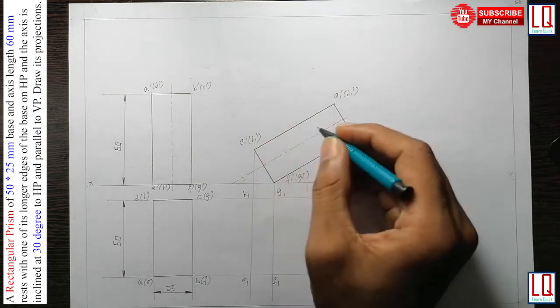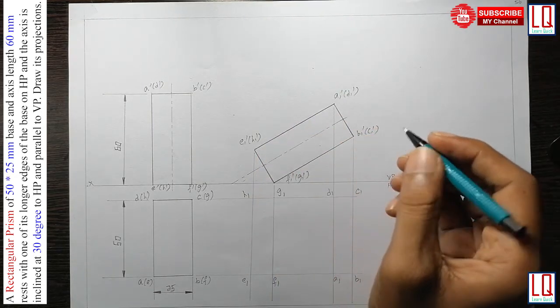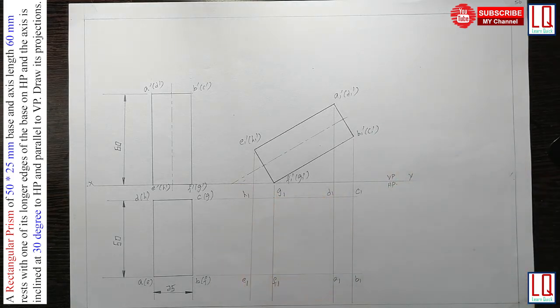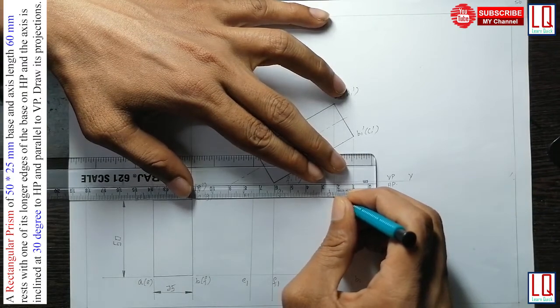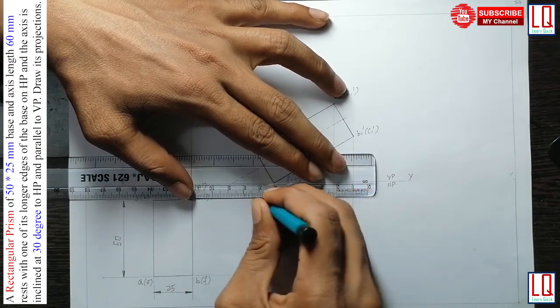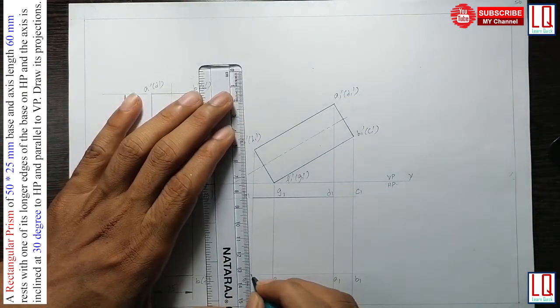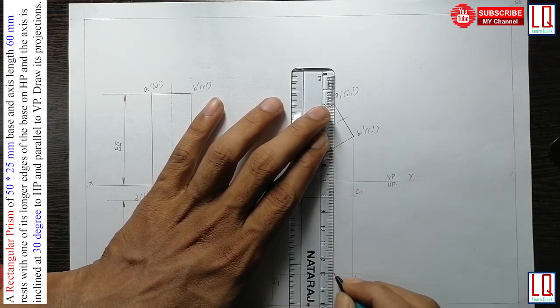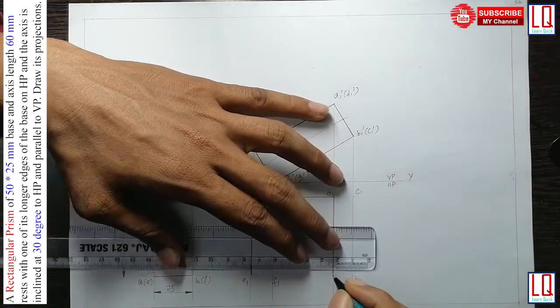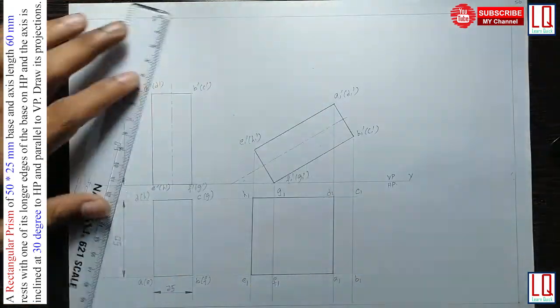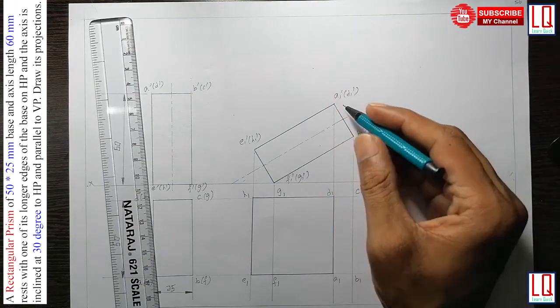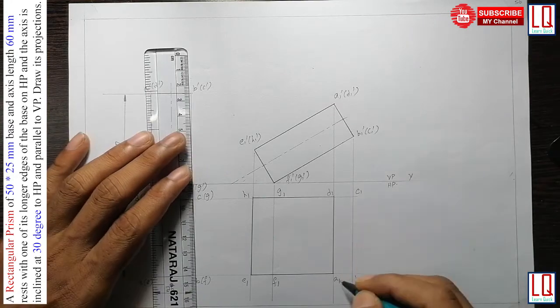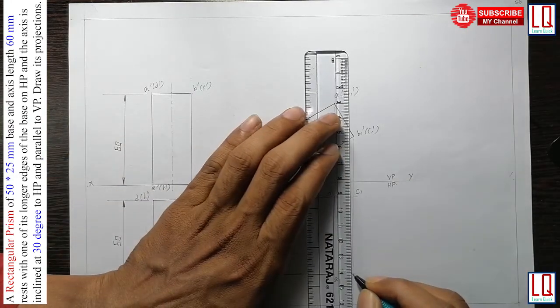So now when you view from the top view, the rectangle ADEF is visible. So we are going to join ADEF is visible from the top view. And when you see from the top view, this rectangle ABCD is also visible from the top view. So we join ABCD with visible line.